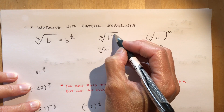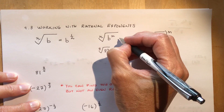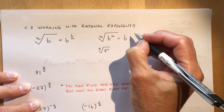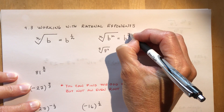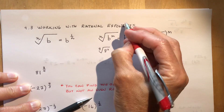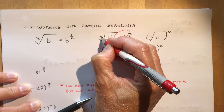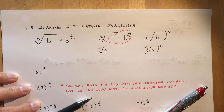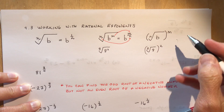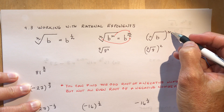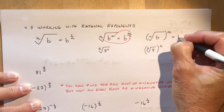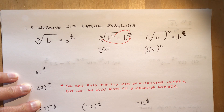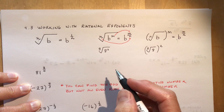When we have the nth root of b to the m, that's the same as b to the m over n — n is the denominator and m is the numerator. Similarly, the nth root of b to the power of m equals b to the m over n. This gives you a couple of different options for how you solve, and that happens a lot with rational exponents.